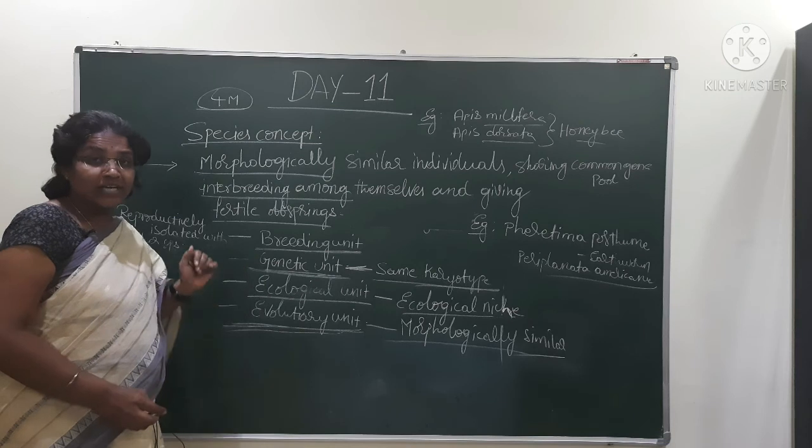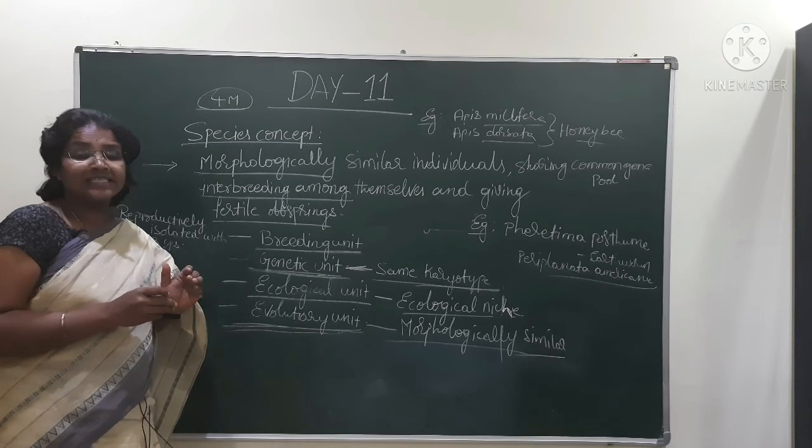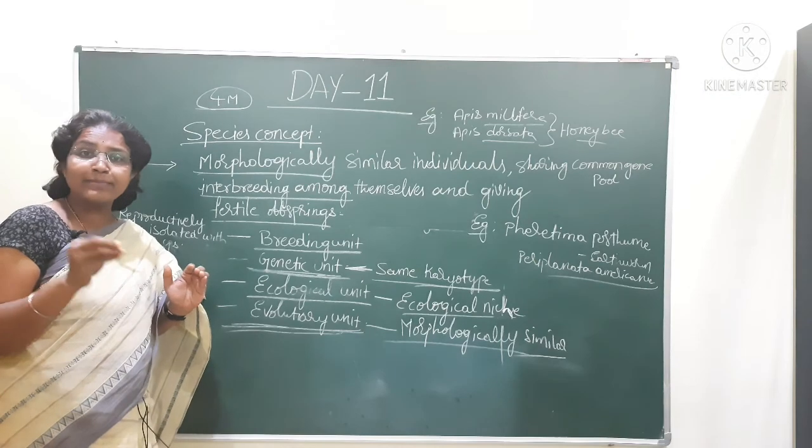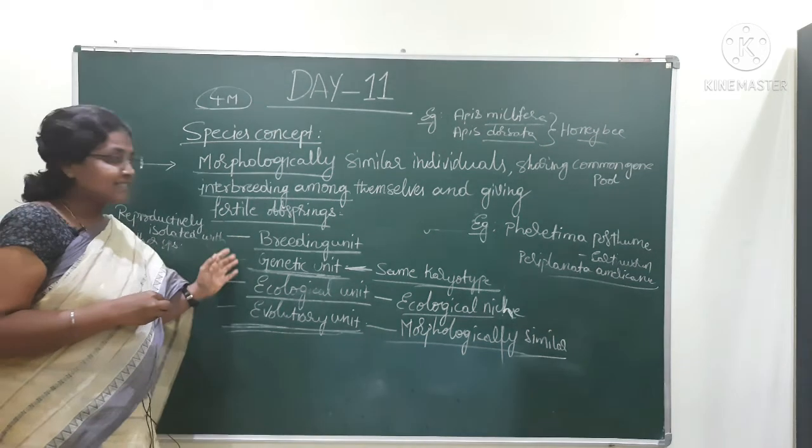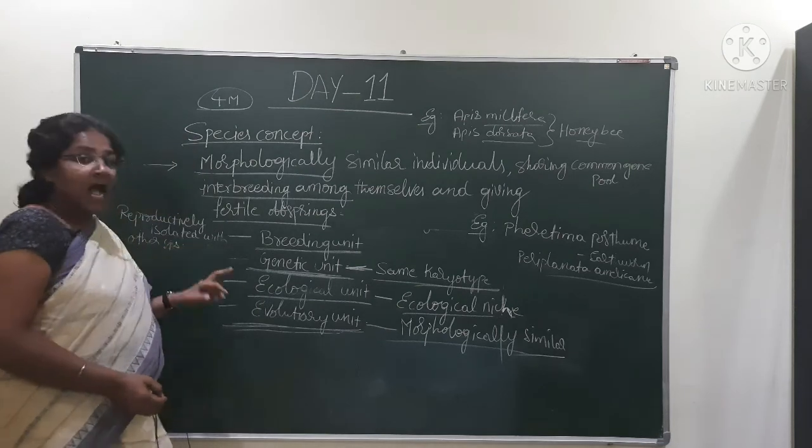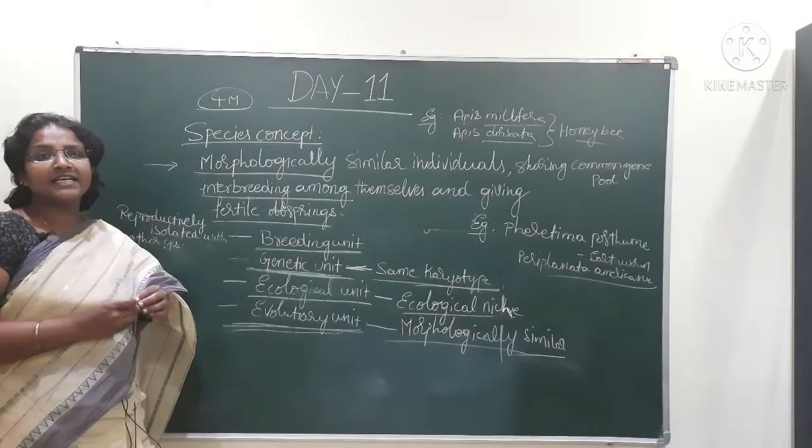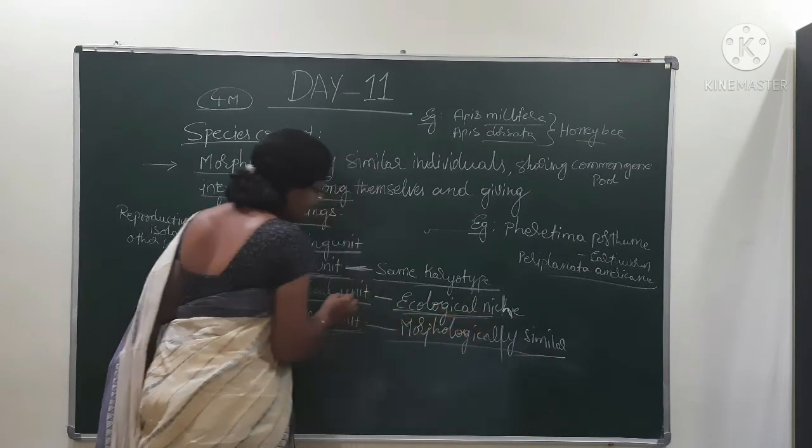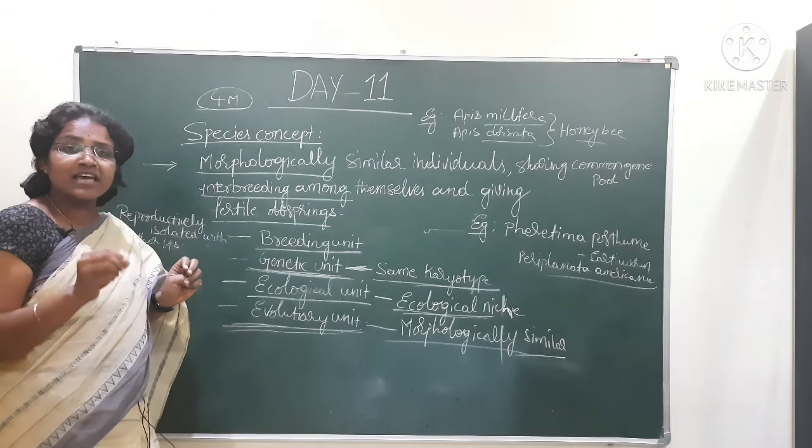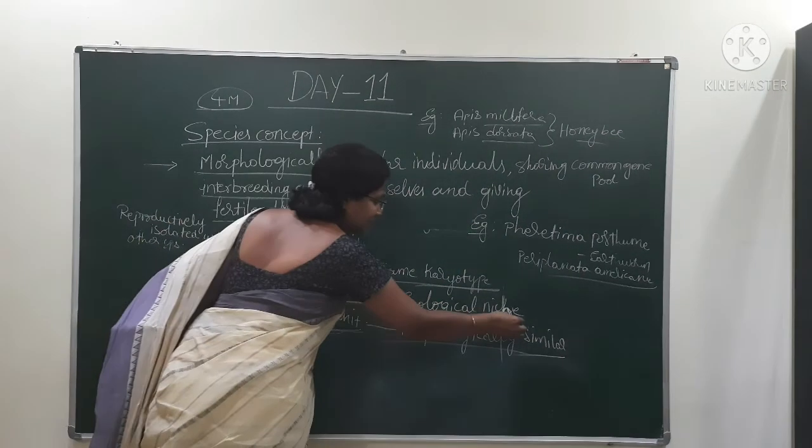Species is a genetic unit because the species have the same number of chromosomes, that is the same karyotype. It is an ecological unit because they exhibit the same function. Ecological niche is same - niche is nothing but the function of the species.